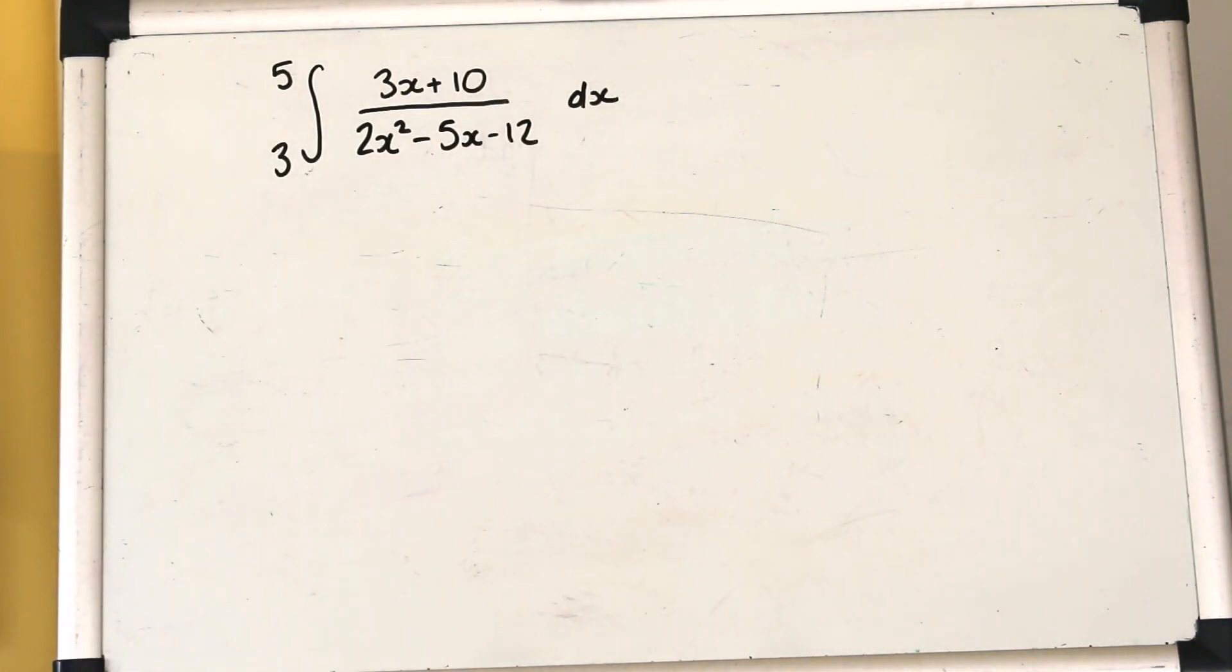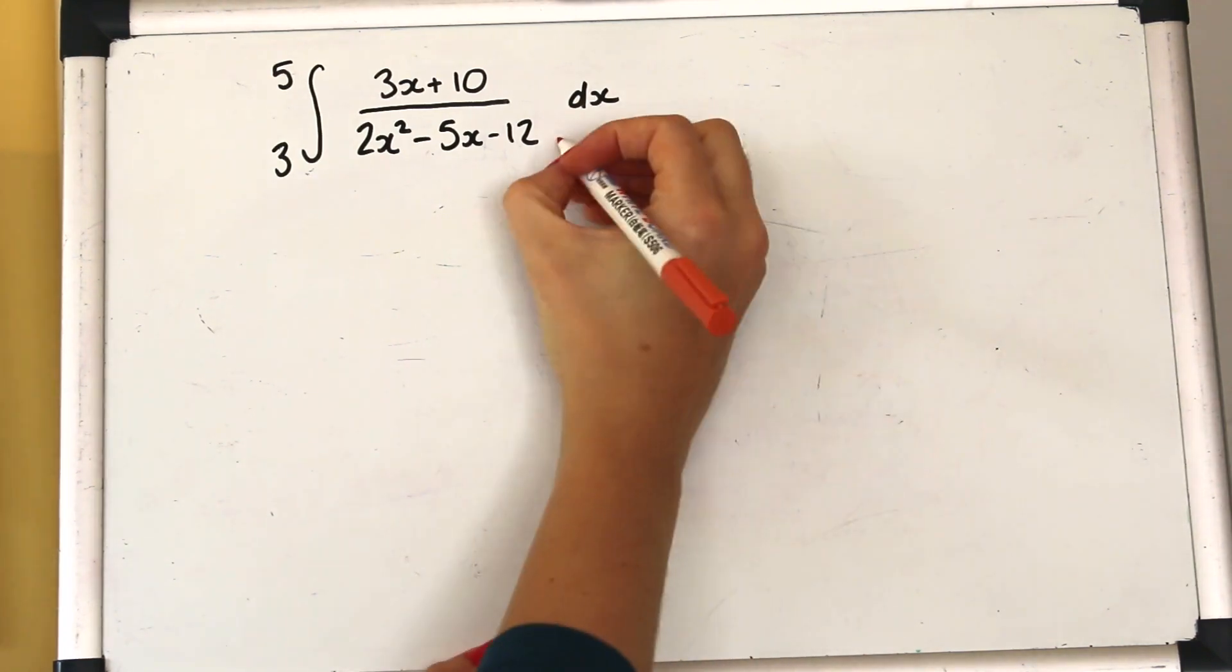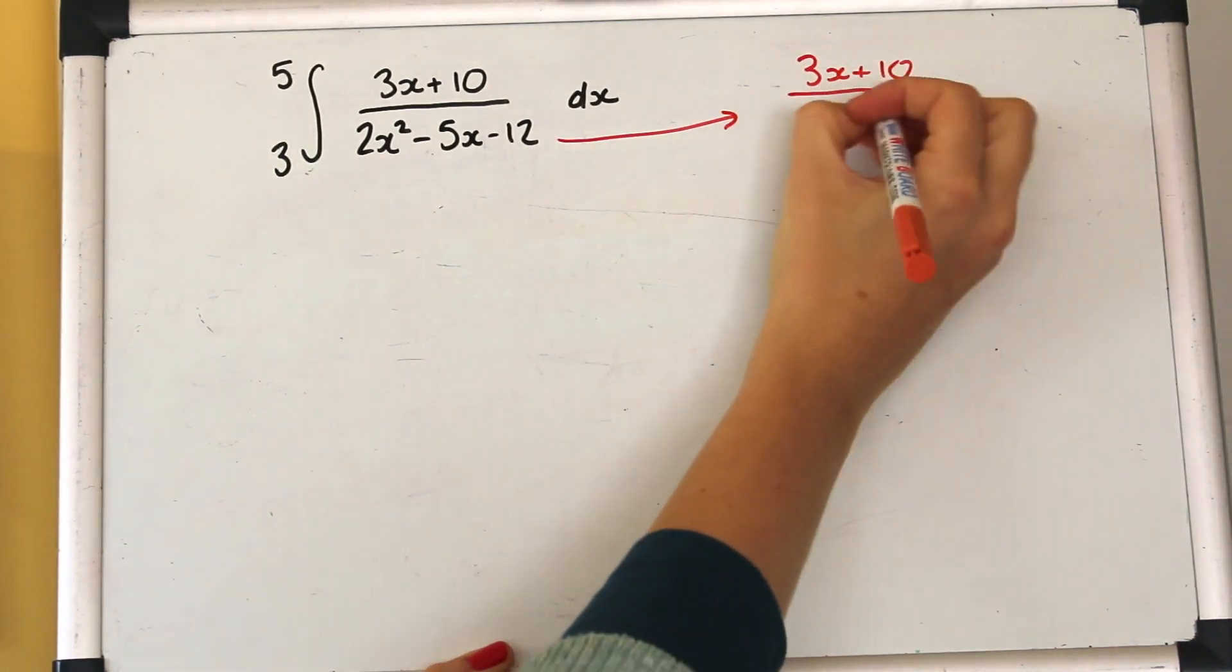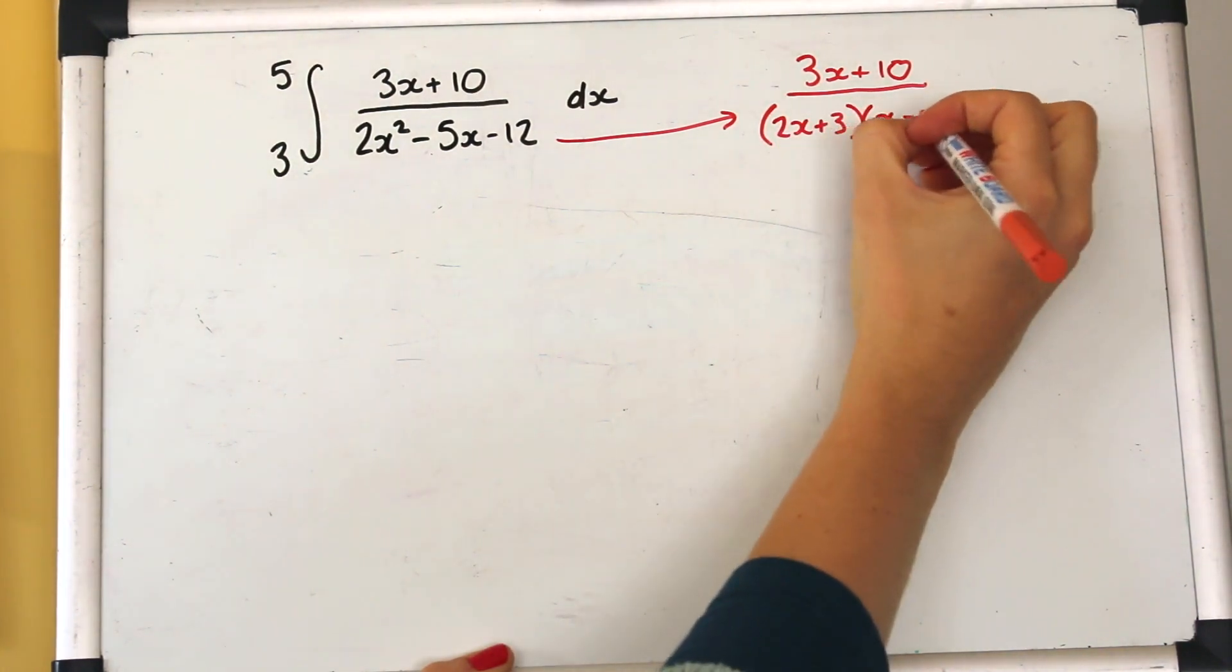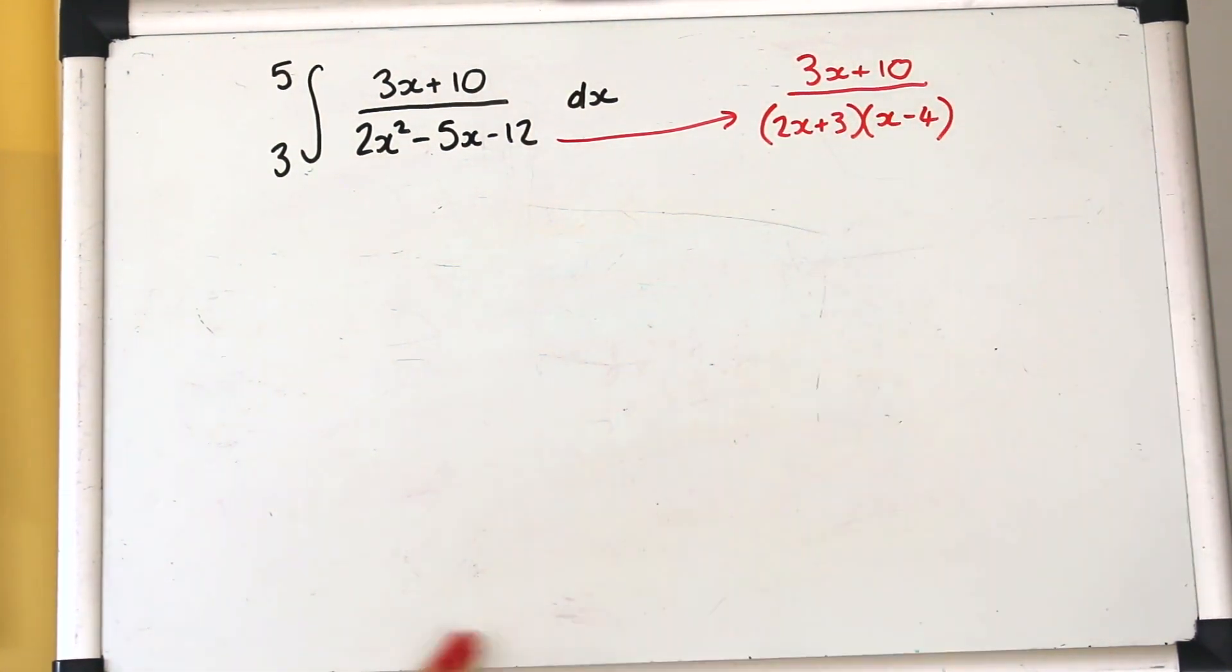So factorising that putting it into double brackets any way that you're comfortable with you can see that it looks like that and now that hopefully starts to look more like a partial fractions question.